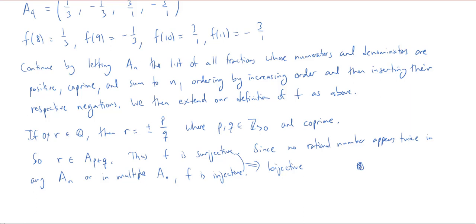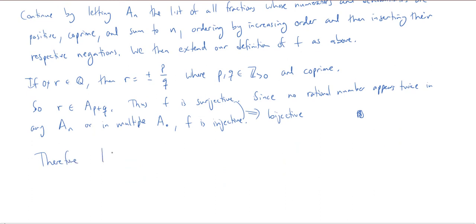We have surjectivity and injectivity, which implies that F is bijective, and that completes the proof. This shows that the cardinality of the rational numbers equals the cardinality of the positive integers. On one hand this feels weird because the rationals are so tightly packed — Q is dense in the real numbers. On the other hand, you might say infinity is infinity. But actually, in a future video, we're going to prove that the set of real numbers is uncountable, meaning there is no bijection from the positive integers to the reals. That'll be pretty interesting. We'll see you next time.